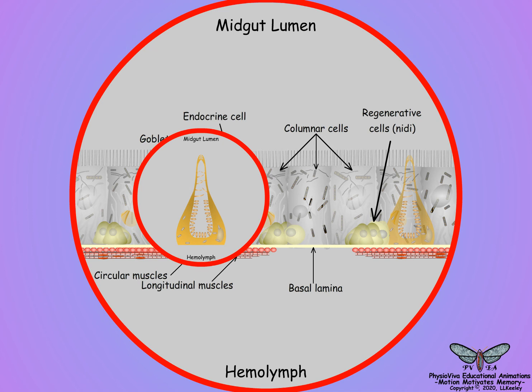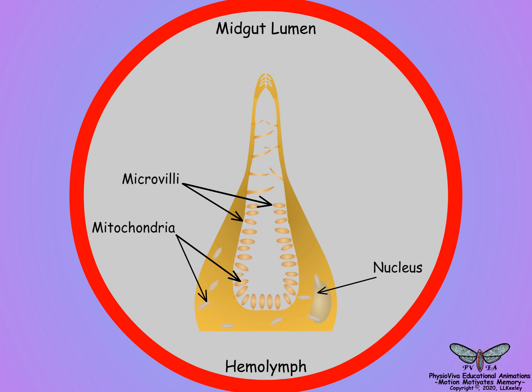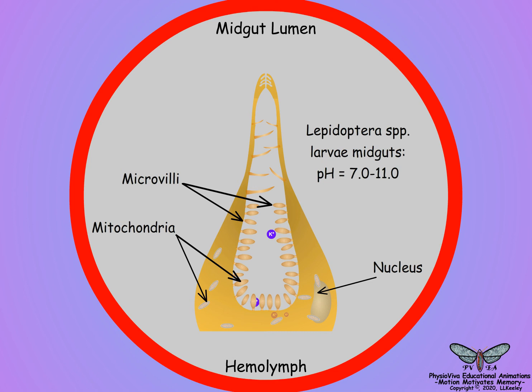Goblet cells have a large central cavity lined with microvilli containing mitochondria and facing the gut lumen. Goblet cells are interspersed among the columnar cells, and they transport potassium ions into the midgut lumen by energy-dependent hydrogen-potassium ion pumps located in their apical membrane. Goblet cells likely play a role in forming the alkaline pH characteristic of the midgut in many plant-feeding insects such as Lepidoptera larvae. Unlike vertebrate digestive systems, which are strongly acidic, the pH of insect digestive systems is highly variable and adapted to the nature of the food. The midgut pH of Lepidoptera larvae ranges from slightly alkaline to highly alkaline depending on the nature of the plants and their chemical content.